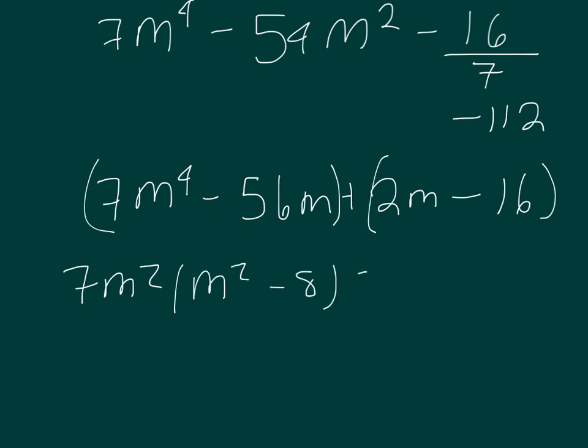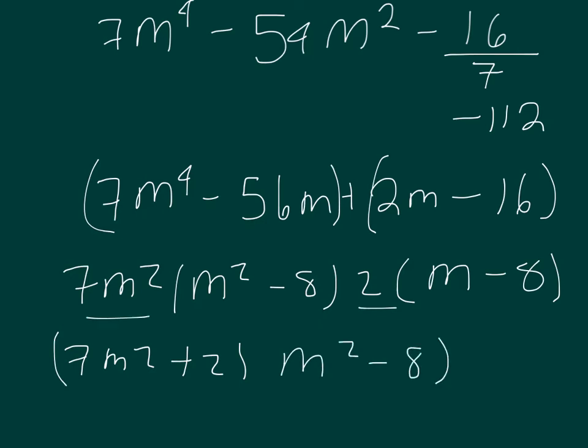And hopefully we've got the same thing in the next parentheses. We're going to take out a 2, and we're going to leave us with m minus 8. So the final step is just going to be take 7m squared plus 2 because those two things are on the outside. And then you're going to take m squared minus 8 because they're the same thing for both.